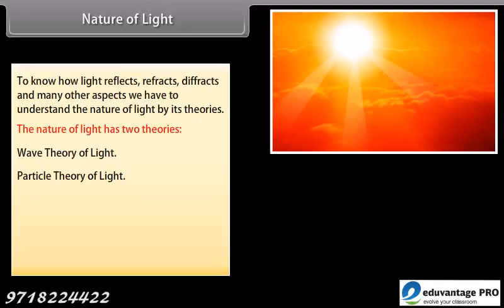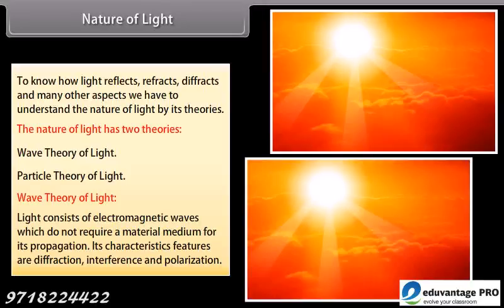Wave theory of light: Light consists of electromagnetic waves which do not require a material medium for its propagation. Its characteristic features are diffraction, interference and polarization.